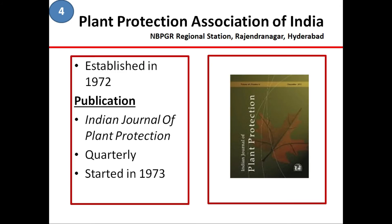Next is the Plant Protection Association of India. This association was established in the year 1972 in Hyderabad. This association publishes a journal called Indian Journal of Plant Protection. This journal started in the year 1973 and it is published quarterly.